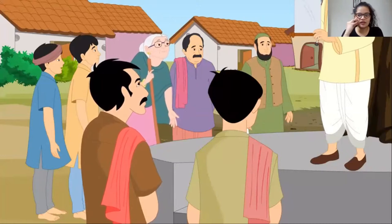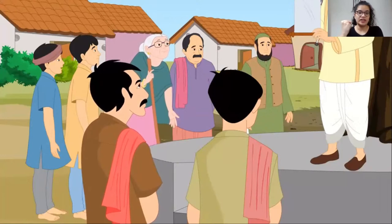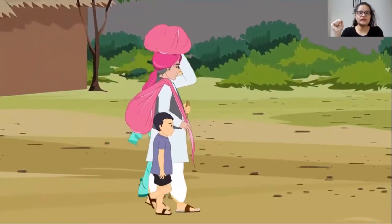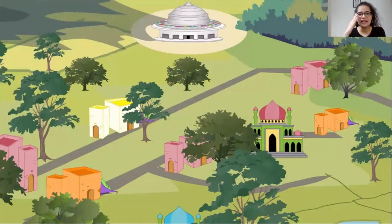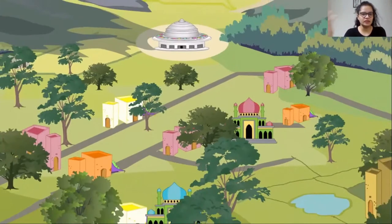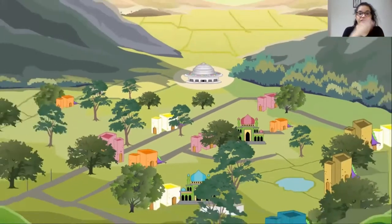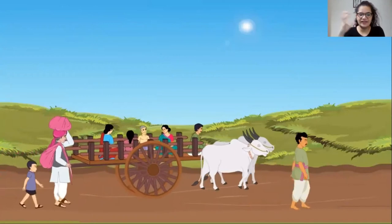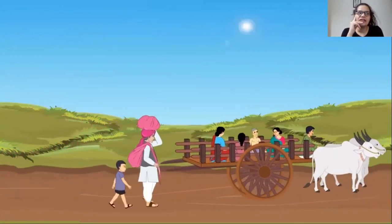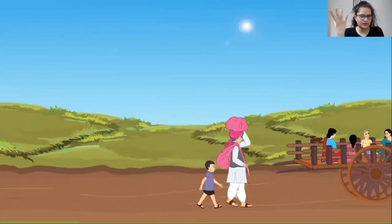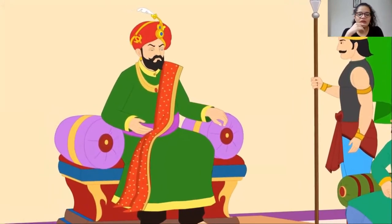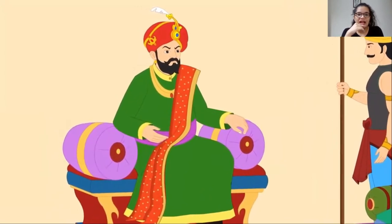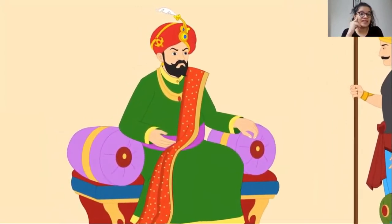Everyone was very scared, because the Tughlaq dynasty was known for their aggression — they were ruthless rulers. He told his messenger to announce that three days would be given to all people residing in Delhi, and with all their necessary items including animals, they needed to leave Delhi and settle in Daulatabad. If anyone was found in Delhi after three days, they would be killed immediately.